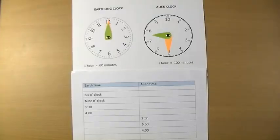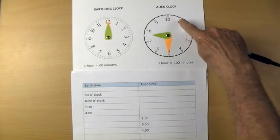An alien visits Earth at midnight. Her clock is divided into ten hours. Each hour is divided into a hundred minutes.